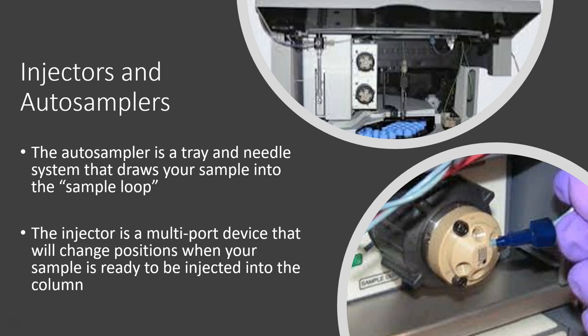The injector is a multi-port device that'll change positions when your sample is ready to be injected into the column. Normally this injector is in a position where eluent can flow through it and straight into the column. But as soon as your sample is in the sample loop and ready to be injected, this port will open up for your sample to go into the column, inject the sample, and then it'll go right back to eluent so that eluent can continue flowing through the system.